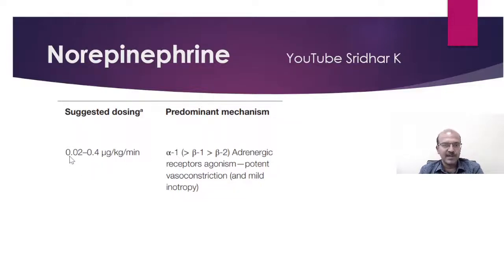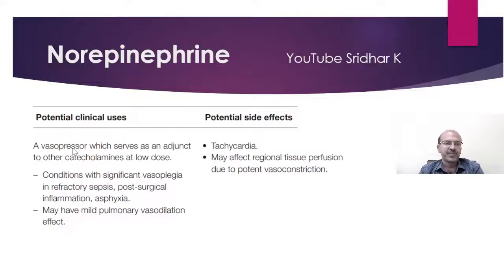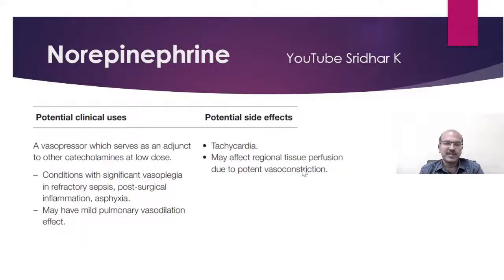Norepinephrine: dose range 0.02 to 0.4 mcg/kg/min. It has alpha-1 effect more than beta-1 more than beta-2, causing potent vasoconstriction with mild inotropy. It is used in conditions with significant vasoplegia — in septic shock it can be the inotrope of choice if the pathophysiology supports it, as well as in post-surgical inflammation and asphyxia. It can cause tachycardia and may affect regional tissue perfusion due to potent vasoconstriction. Norepinephrine is being used more often now, and where there is dopamine resistance you can transition to it.